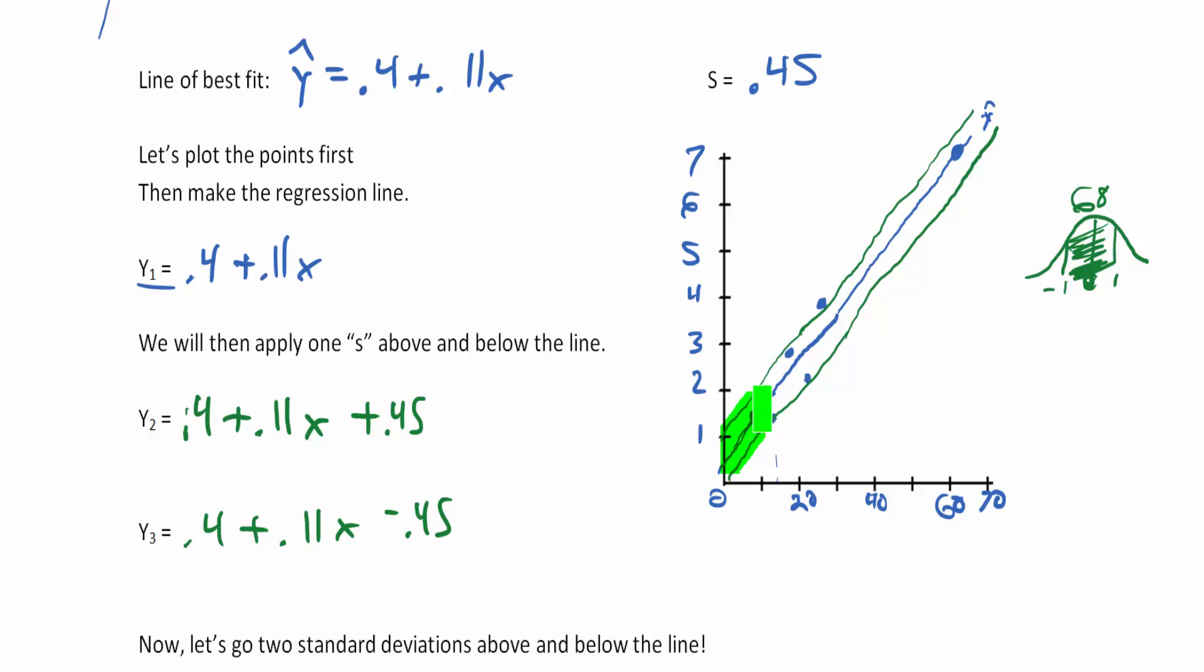What we're saying is this green zone: 68% of the data is inside that green zone. So you are probably not going to land exactly on the line of best fit.